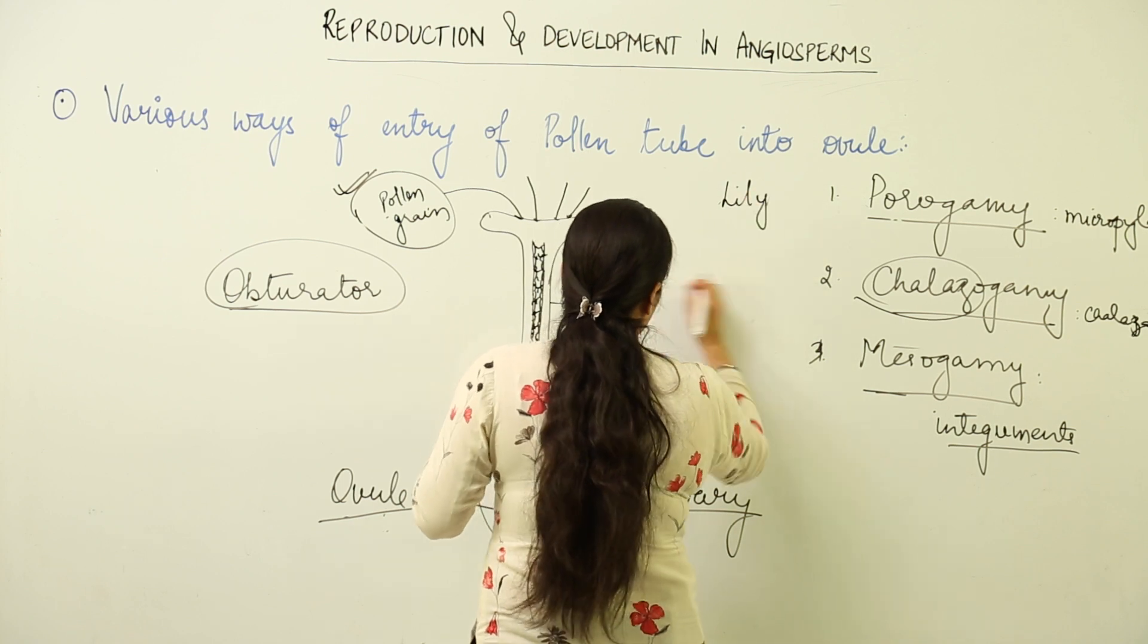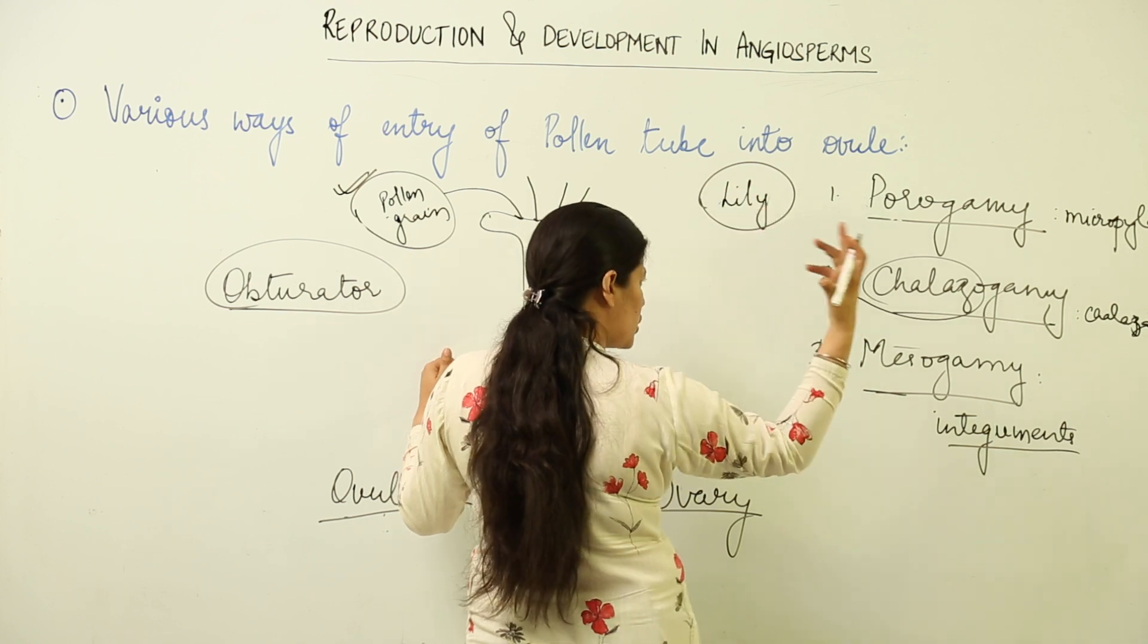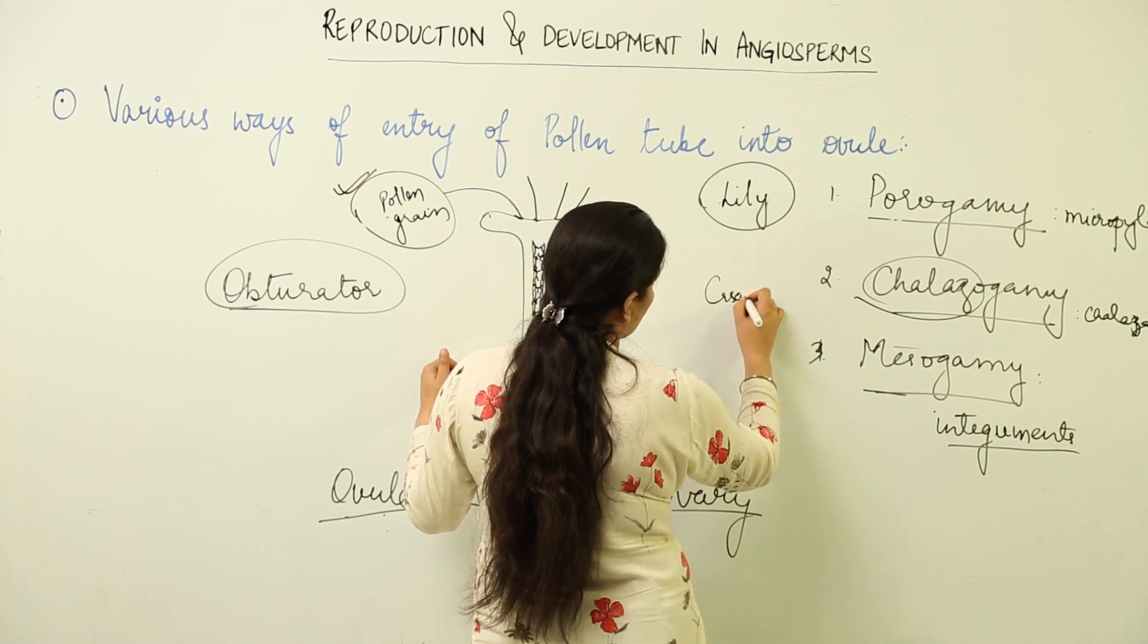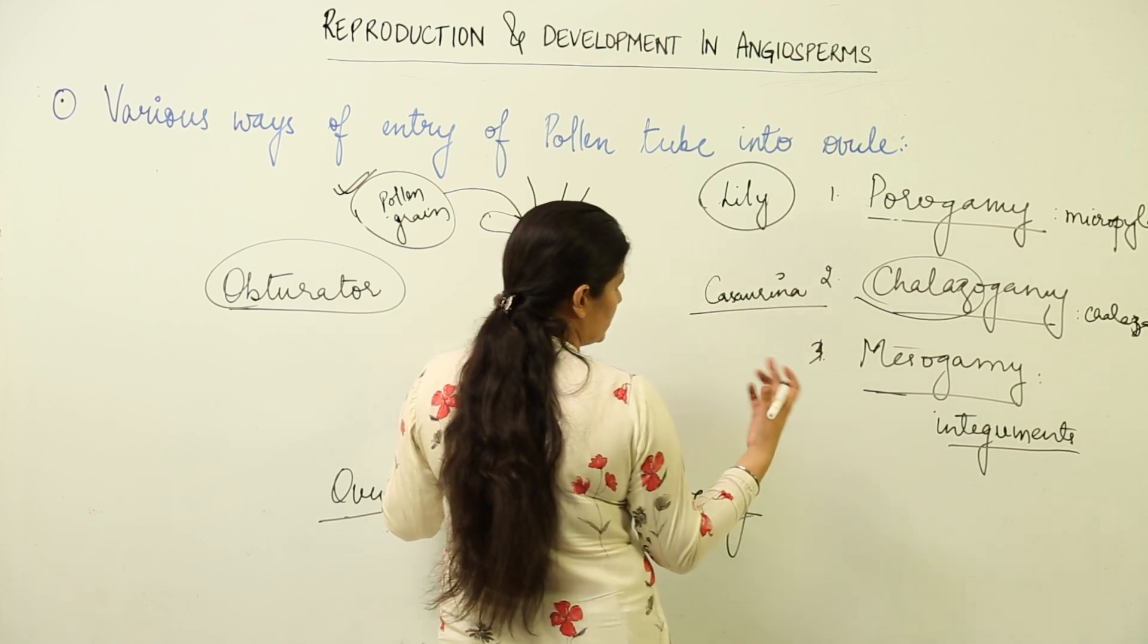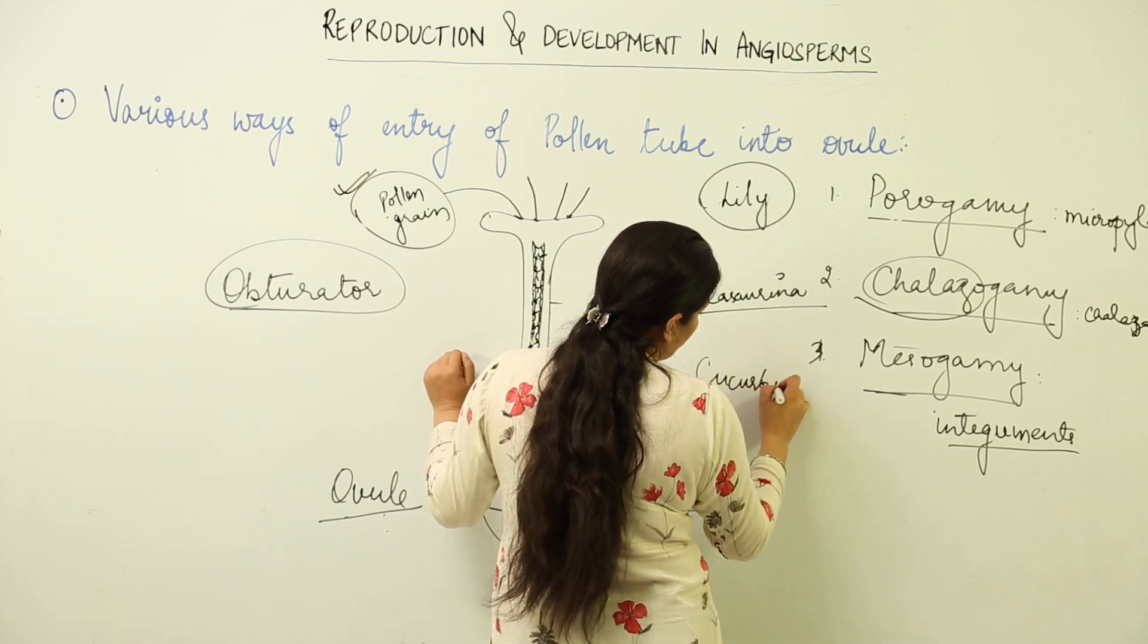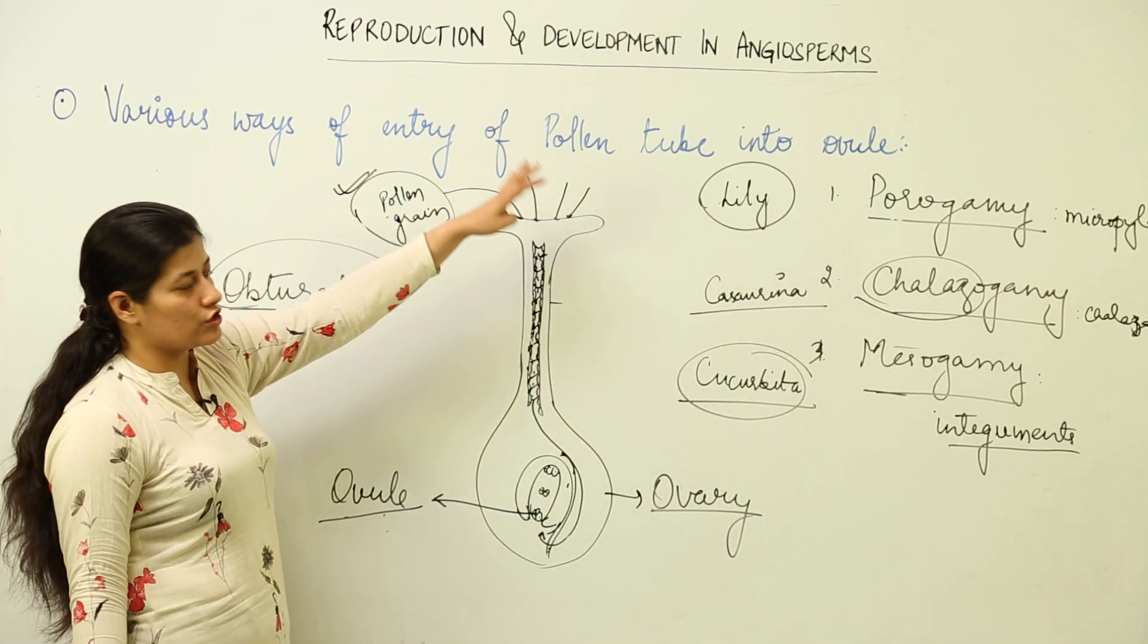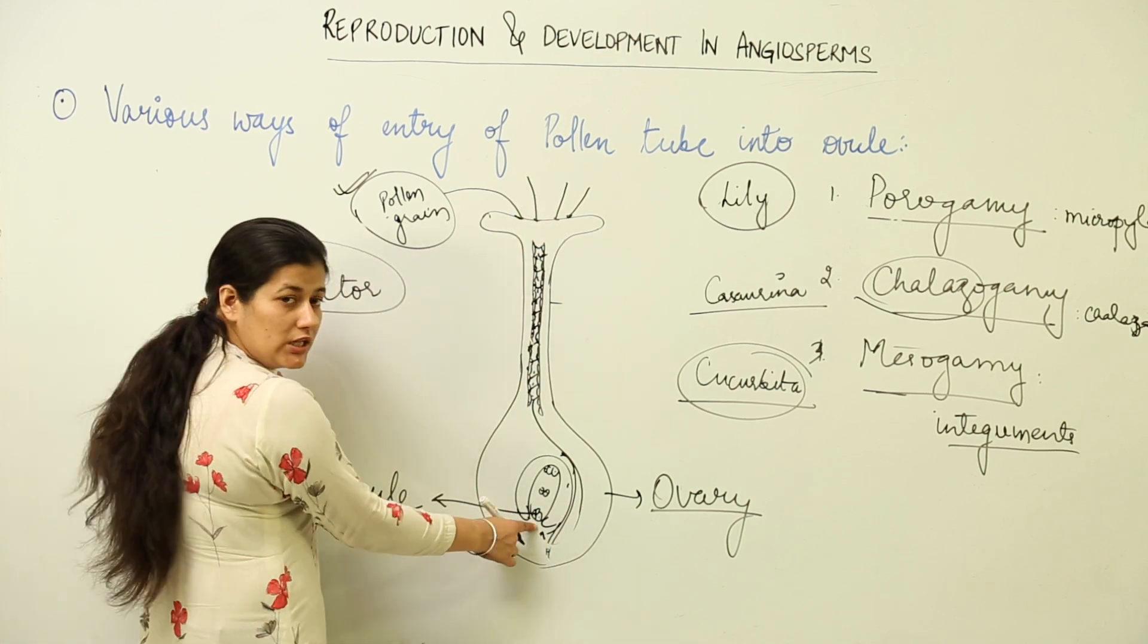The next few minutes will be dedicated to porogamy only because this is the most common way in which the pollen tube enters the ovule. The second one is Casuarina, otherwise known as common oak, and all the Cucurbitaceae family has the misogamy method of entry of pollen tube into the ovule.